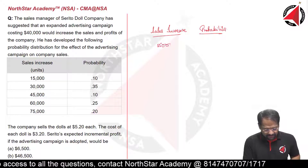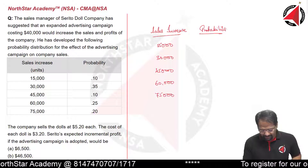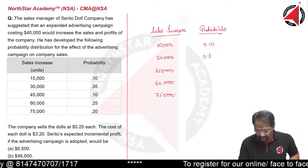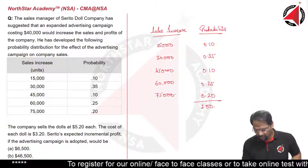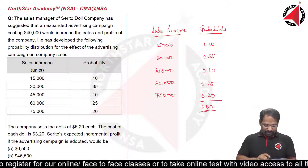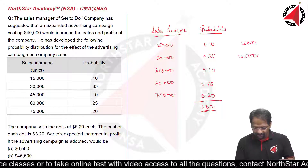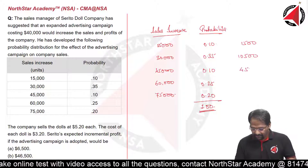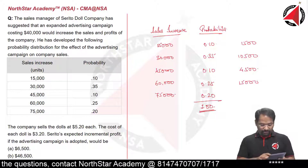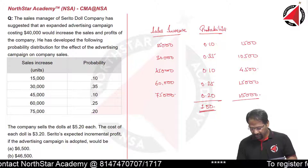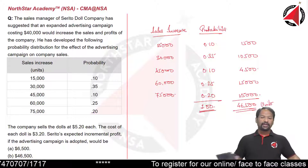The sales increases are 15,000; 30,000; 45,000; 60,000; and 75,000. The probabilities are 0.10, 0.35, 0.10, 0.25, and 0.20 — the sum of all probabilities should always equal 1. Multiplying: 15,000 × 0.10 = 1,500; 30,000 × 0.35 = 10,500; 45,000 × 0.10 = 4,500; 60,000 × 0.25 = 15,000; 75,000 × 0.20 = 15,000. The grand total gives expected units of 46,500.